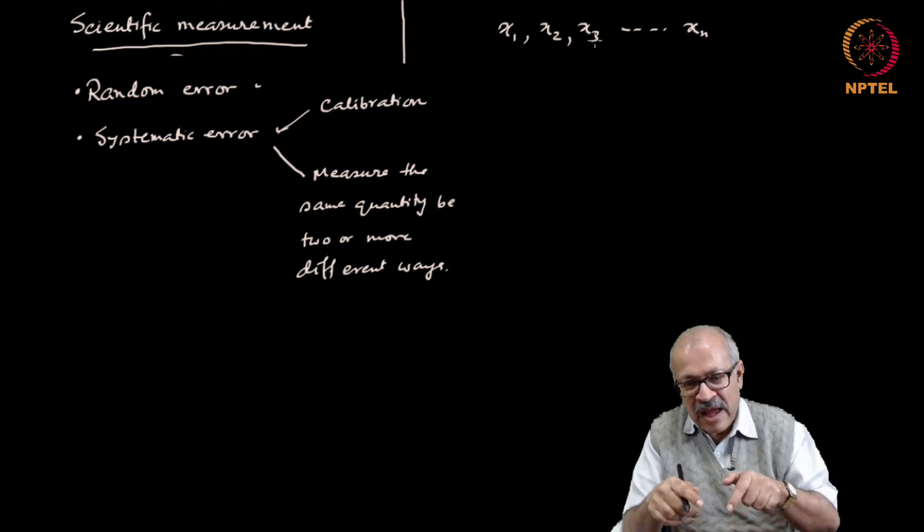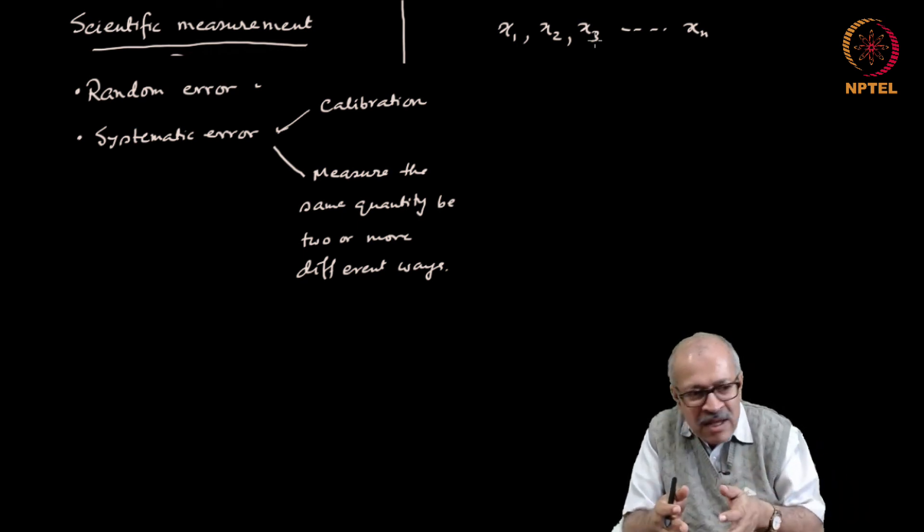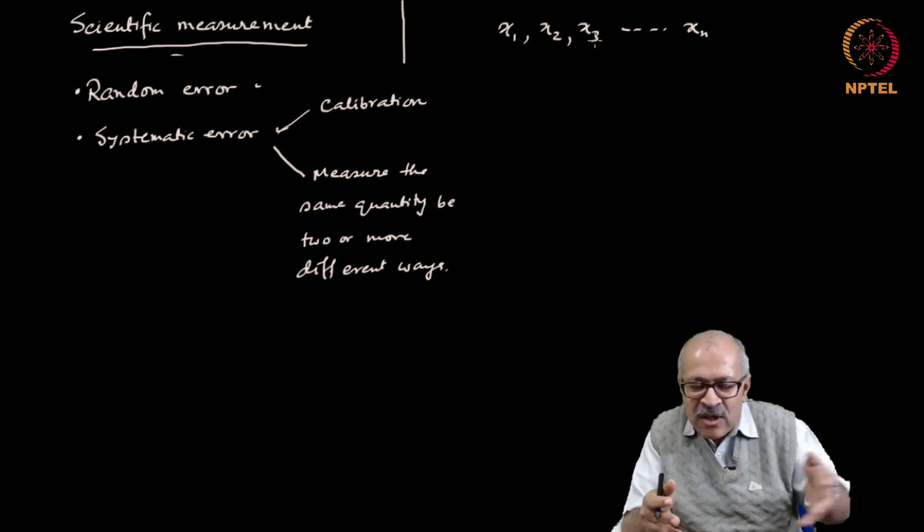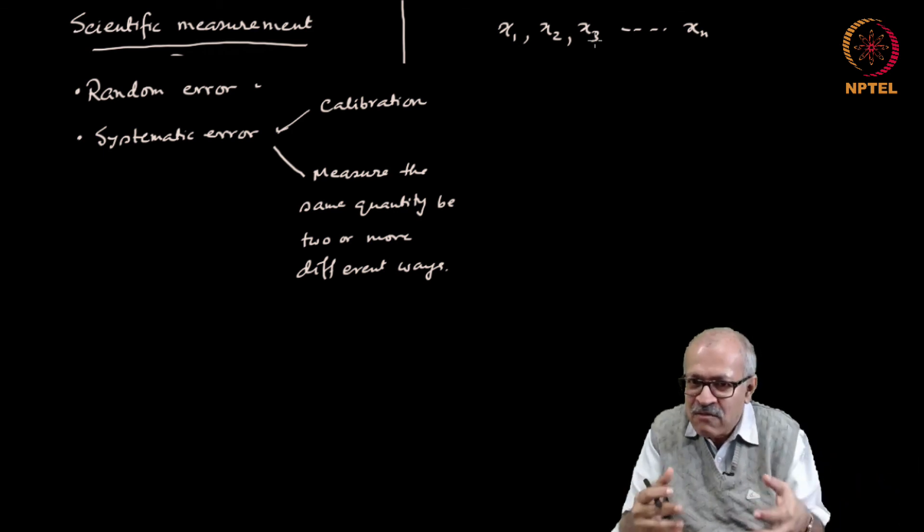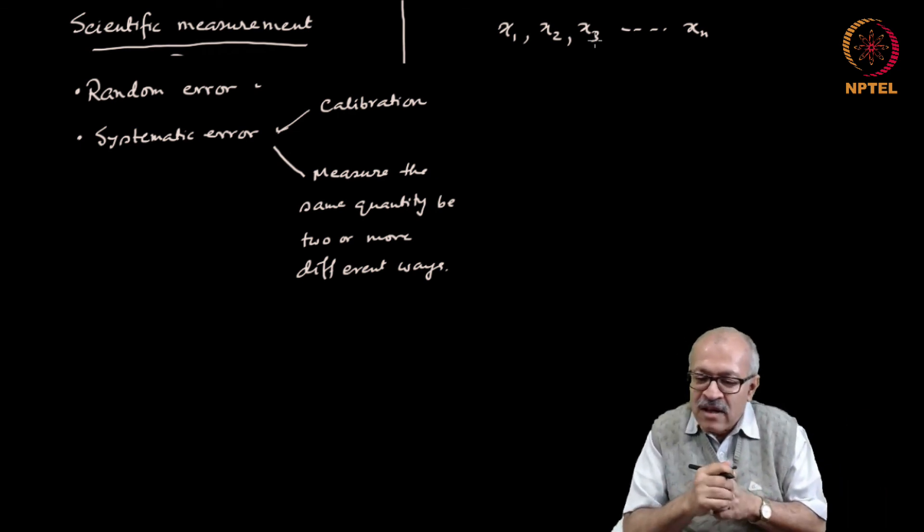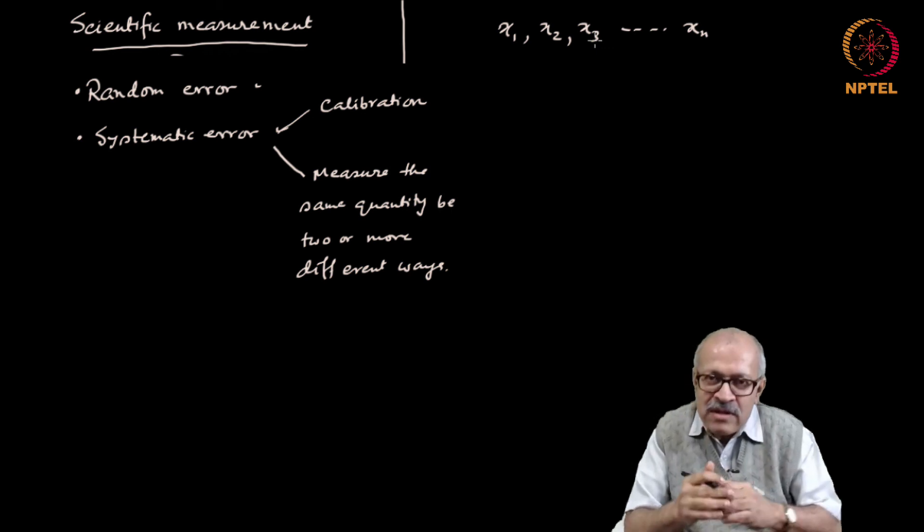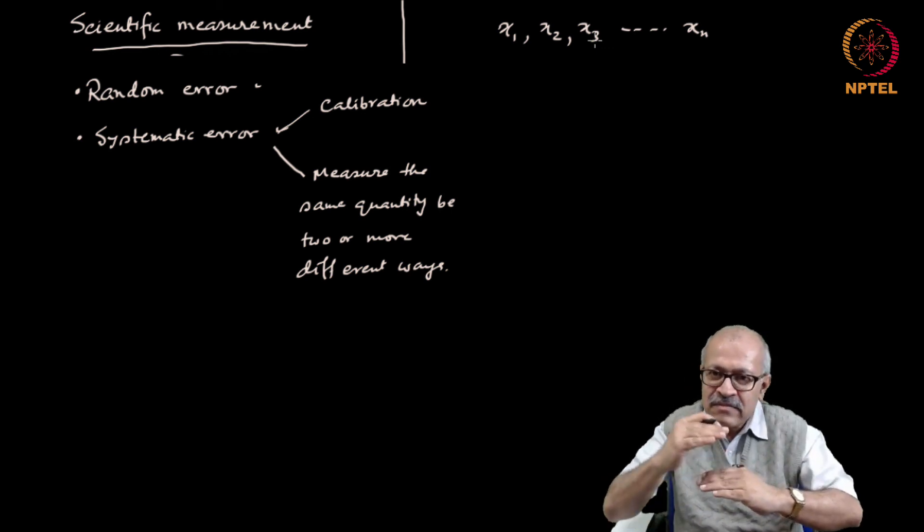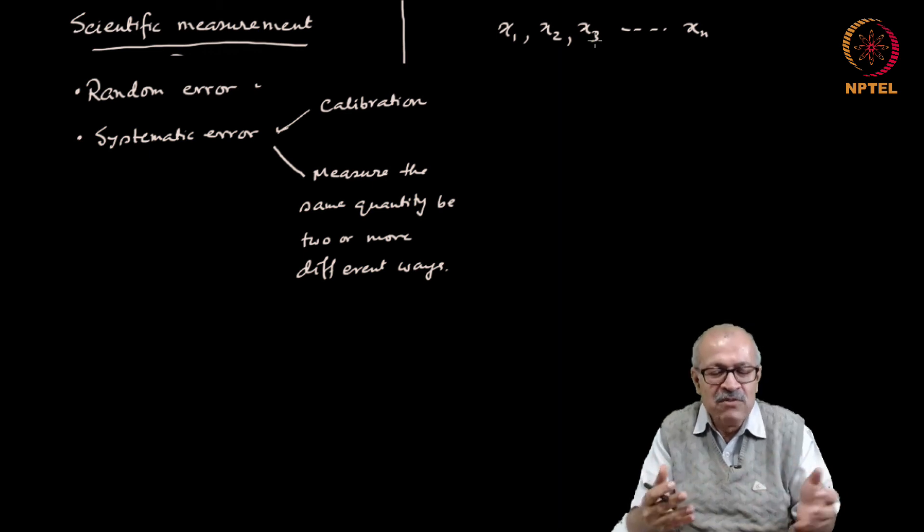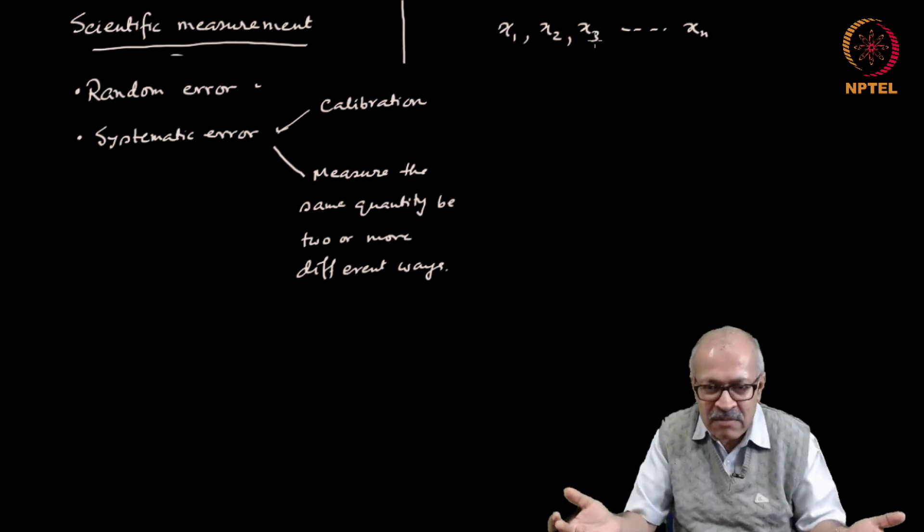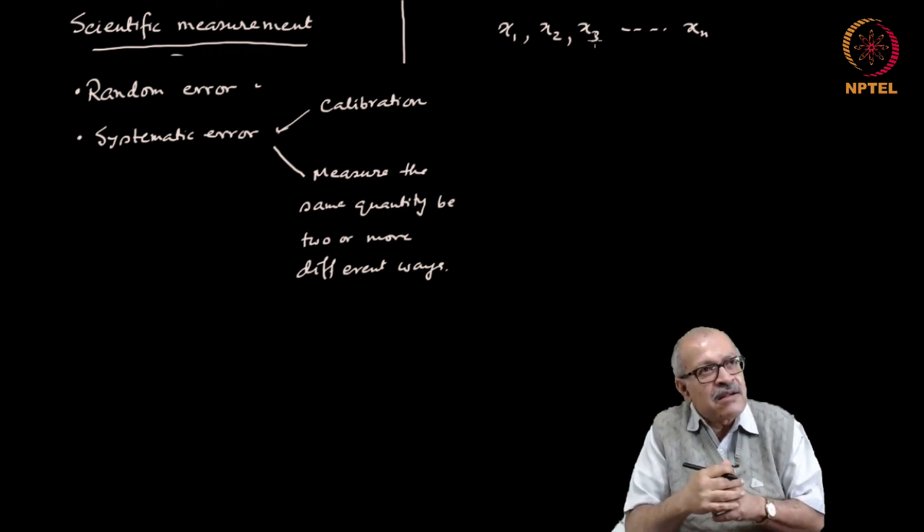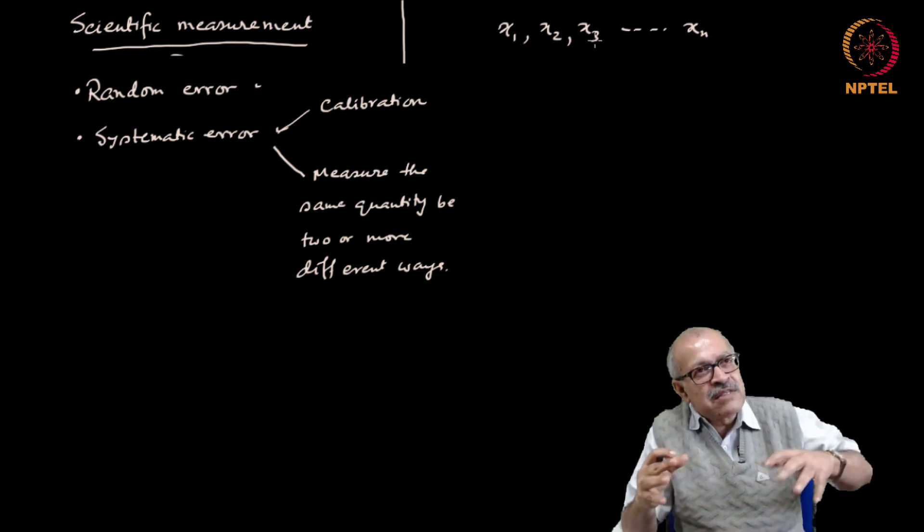How do we state it in the sense that an experiment has to be repeatable, repeatable anywhere in the world. Therefore I have to state it in a form so that anybody repeating the experiment anywhere in the world should get the same result. And how do I state it? If I state a number, another person doing the experiment somewhere else will not get the same number. So how is it repeatable then? There has to be some way of stating the number that you measure in such a way that it is repeatable. So how do we state it? Should we declare it as a range? If so, how big is the range? And you know that we always use something called an error bar. How big will be the error bar? How do we decide how big the error bar will be?